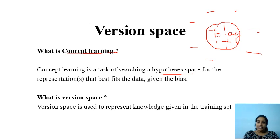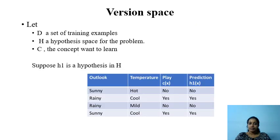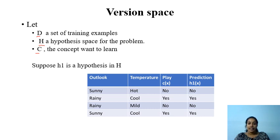Now let us clarify what is version space. Version space is a set of consistent hypotheses among all hypothesis space — that is how we represent the knowledge of this concept. We consider D as a set of training examples, H as a set of hypothesis space, and C as the concept that we want to learn. D is a set of examples (positive and negative), H is a set of rules or models, and C is the concept we want to learn, which is play.